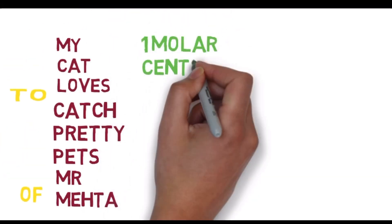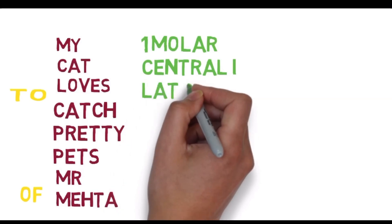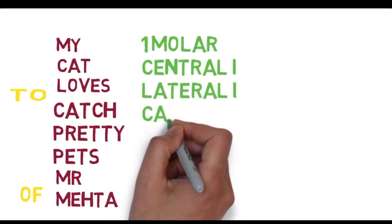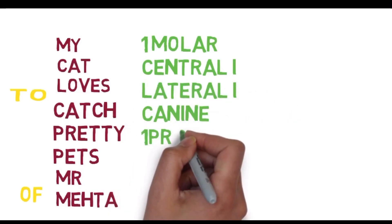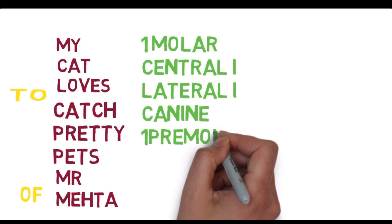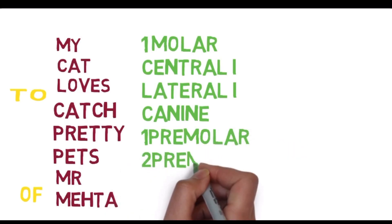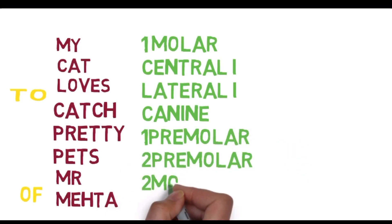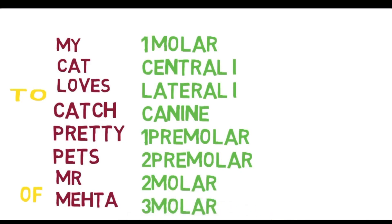So: M of My is first molar, C of Cat is central incisor, L of Love is lateral incisor, C of Catch is canine, P of Pretty is first premolar, P of Pets is second premolar, M of Mister is second molar, and M of Mehta is third molar.